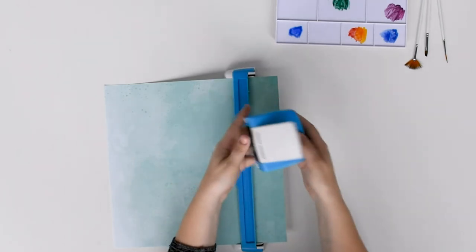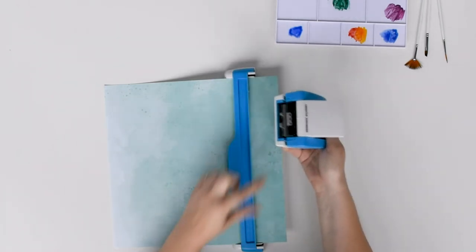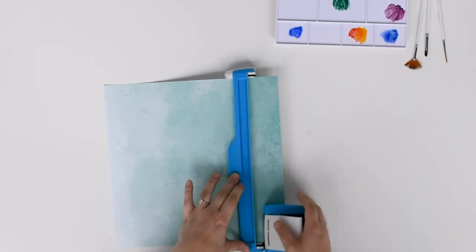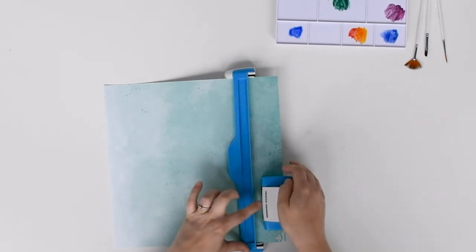Line up the housing unit to the guide, making sure that the notches on each line up. Holding the guide with one hand, press down on the white lever on the housing unit with your other hand to create the first section of your border.